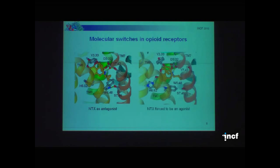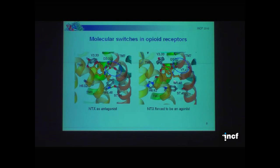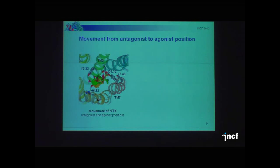We also found the action of another switch. When we forced the antagonist naltrexone to bind to histidine, we found a change in the state of two switches: the first is the ionic bridge between helix-3 and helix-7, and also the rotamer switch of tryptophan located on helix-6 — moving from a vertical to a horizontal position. So not only the structure of the ligand but its position is important for starting activation of the receptor. This is the same antagonist ligand — here in the typical antagonist position, and here in the position of an agonist. The movement is only about two angstroms, but this is enough to completely change the action of the receptor.